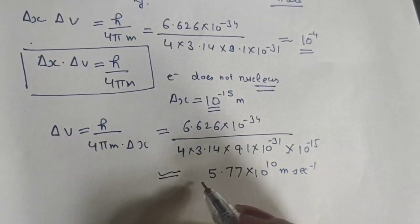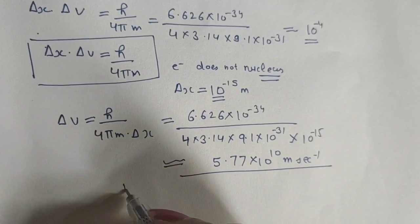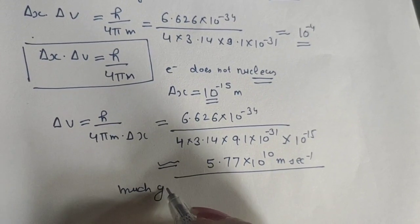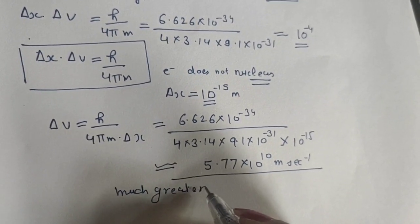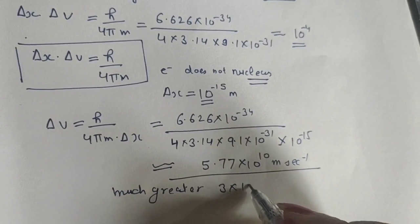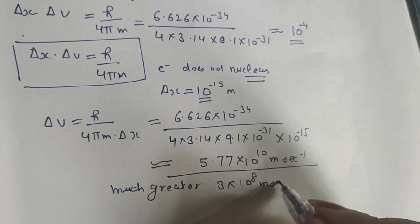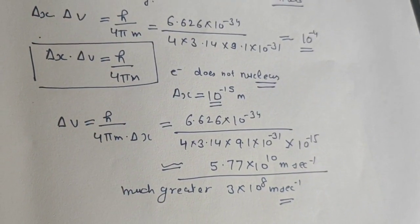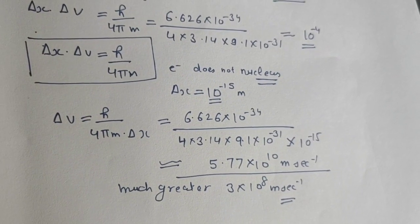This velocity value is much greater than the velocity of light, which is 3×10^8 m/s. This means our assumption was wrong—electrons do not exist in the nucleus.